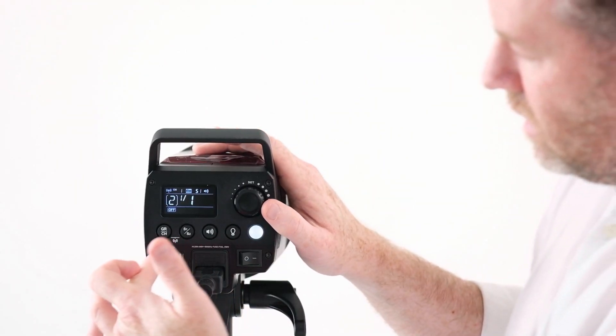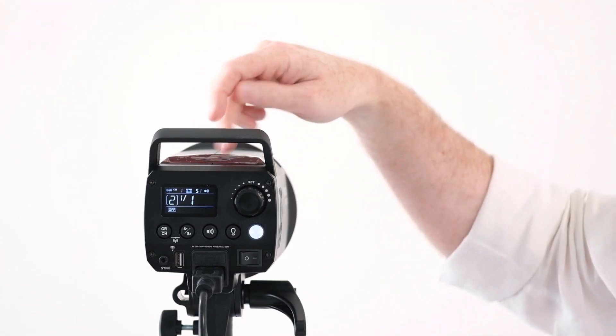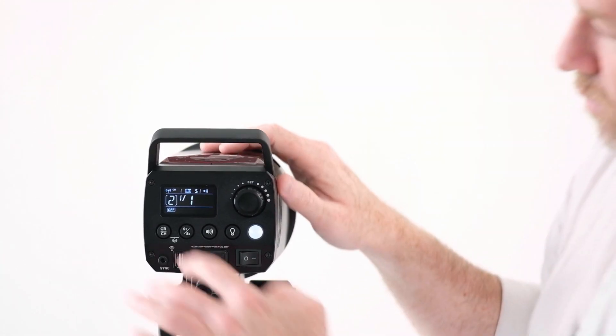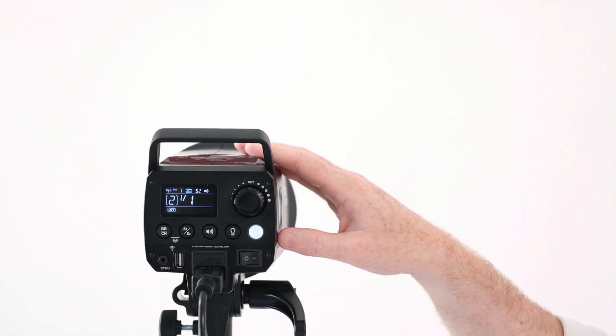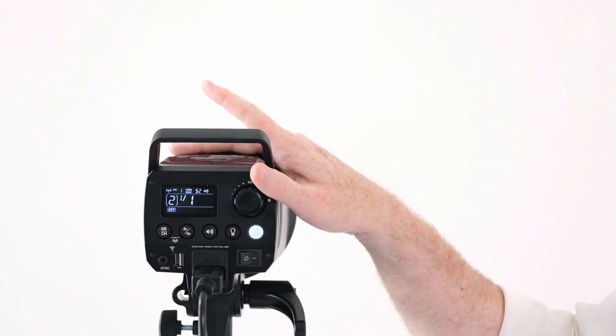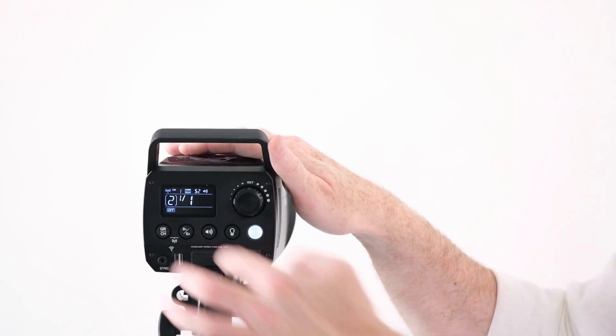By activating those modes, S1 or S2, we can simply trigger this flash with a burst of another flash. If we have it in S1 mode, when a flash fires, this will simply fire at the same time, as long as the other flash can be seen by the optical sensor. If we put it into S2 mode, this is slightly more sophisticated to deal with a flash that might be a TTL flash—a pop-up flash might be a good example—where you don't want it to fire on the pre-flash. In S2 mode it will ignore the pre-flash and fire on the real flash.